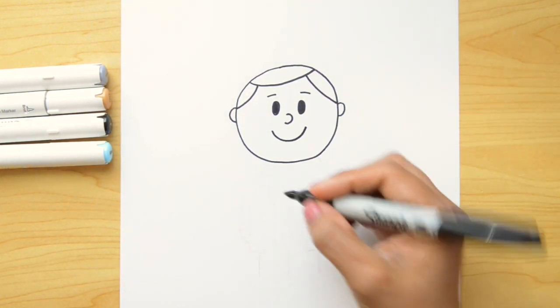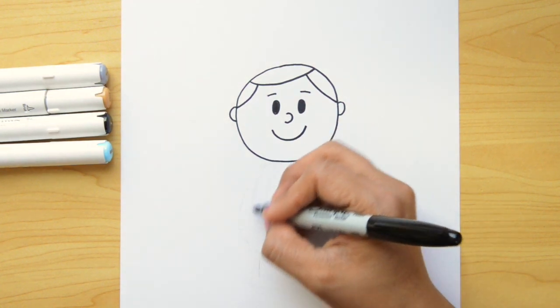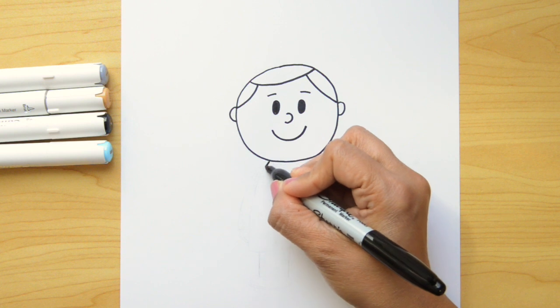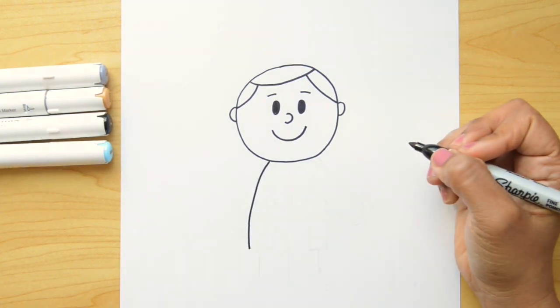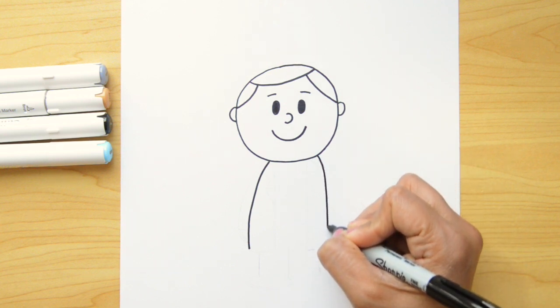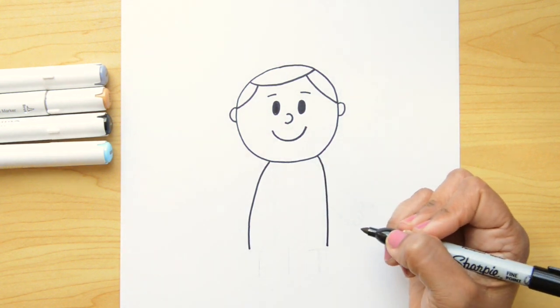And now I'm gonna continue with the body. Let's do two curved lines that go down. The first one here on the left, I'm gonna go here. And this one is a little long because it's gonna be part of the doctor's coat. Okay. Now let's do the one on the right. It goes down the same thing.